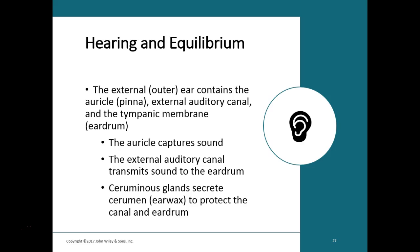In the external auditory canal, modified sweat glands called ceruminous glands secrete earwax. The earwax is thick and sticky, providing waterproof protection for the ear canal and helping to keep foreign objects out. Ear hair serves the same protective purpose. Cerumen can become impacted, especially with frequent Q-tip use, and once the canal is impacted, the buildup can block sound waves and lead to conduction deafness.